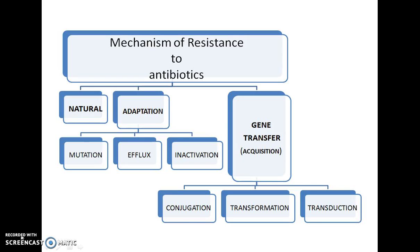The mechanism of resistance to antibiotics can be of three types: natural, adaptation, or gene transfer. Some bacteria, because of their structure and function, have natural resistance against antibiotics, while others develop or adapt to the chemical changes in their surroundings. Another form of resistance is the acquisition of resistance to antibiotics through gene transfer.